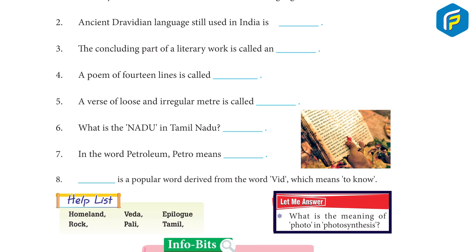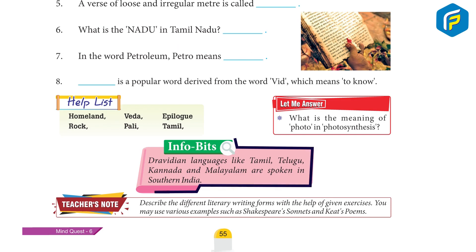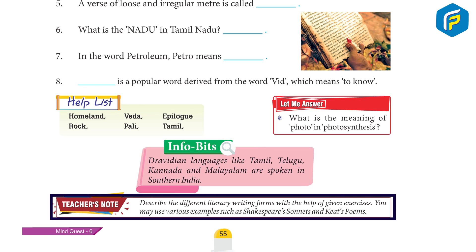Infobits: Dravidian languages like Tamil, Telugu, Kannada, and Malayalam are spoken in southern India. Teacher's note: describe the different literary writing forms with the help of the given exercises. You may use various examples such as Shakespeare's sonnet and Keats's poem.